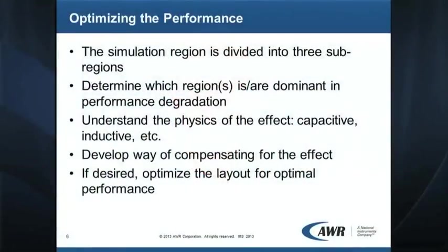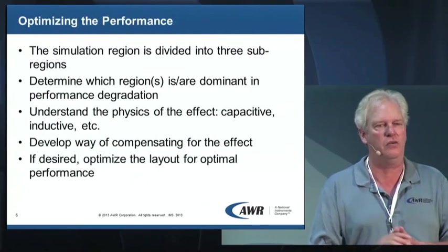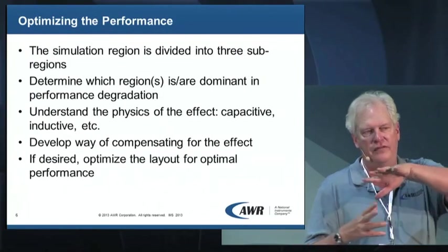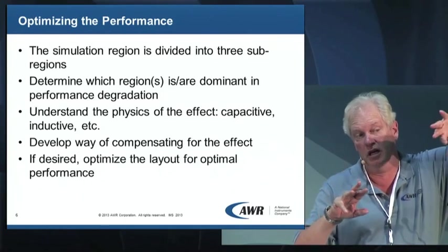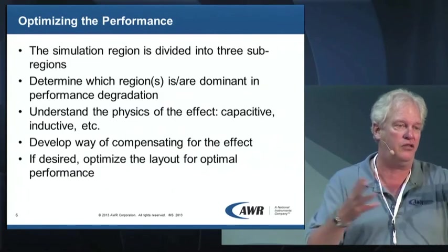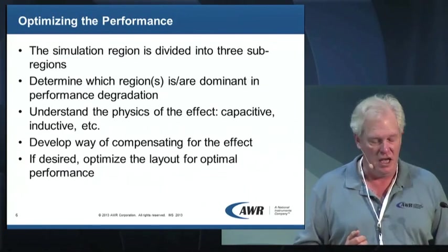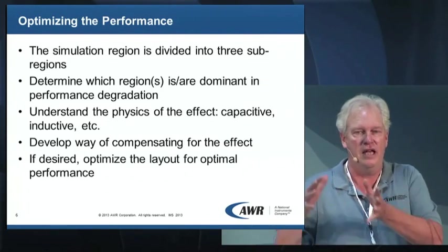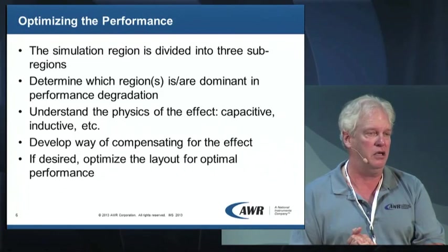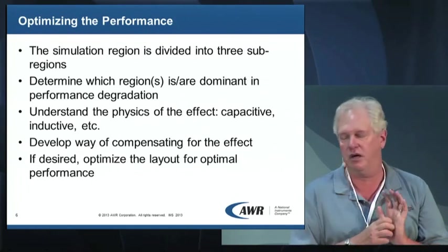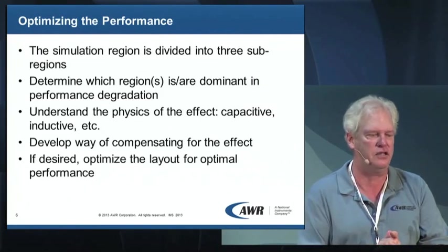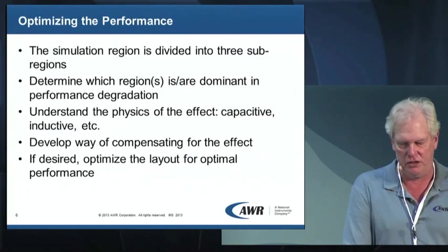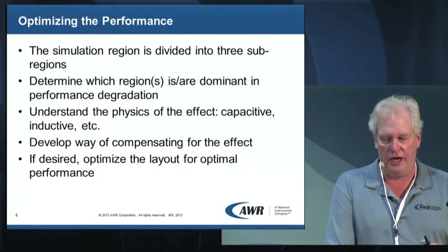The simulation region has basically three obvious places to look: the line on the board, the transition through the BGA, and over the bond wires to the chip. Those are three obvious spots where something might go wrong. The designer is going to change the simulation boundary, isolate the part they're interested in, get the ports set up, look at the results, and compensate to get better performance. Let's go ahead and do that.